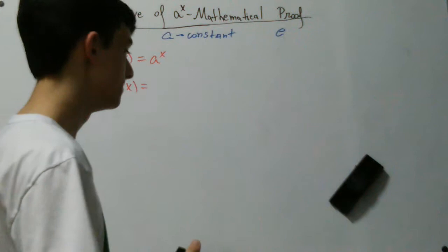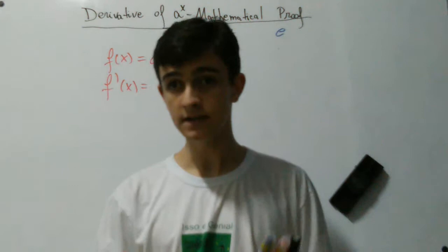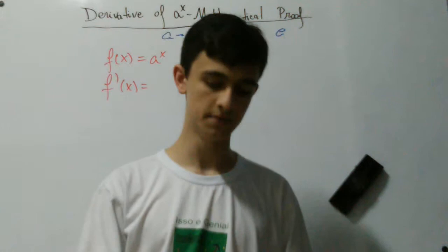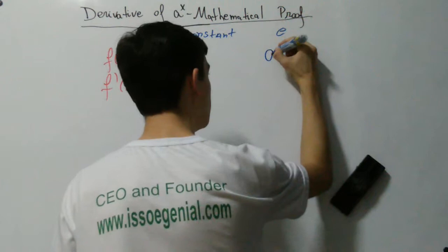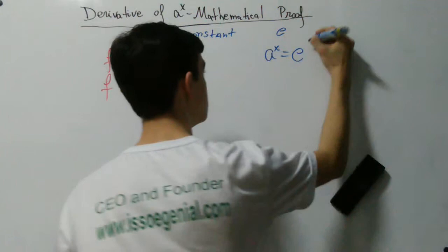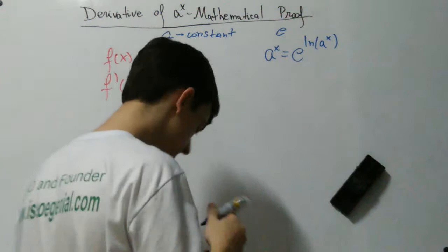This number appears naturally in calculus, and we have a video proving that — showing how this number appears naturally in calculus — whose link I'm going to put in the description below. Our manipulation is going to be: we are going to say that a to the x is equal to e raised to the natural log of a to the x. And this is a property of logarithms.